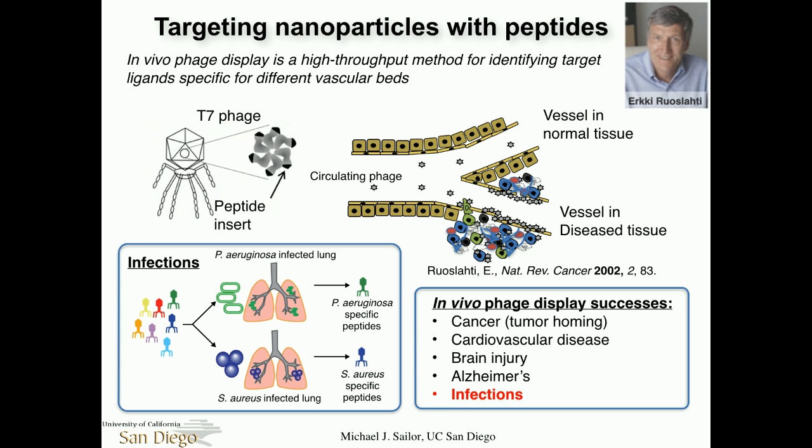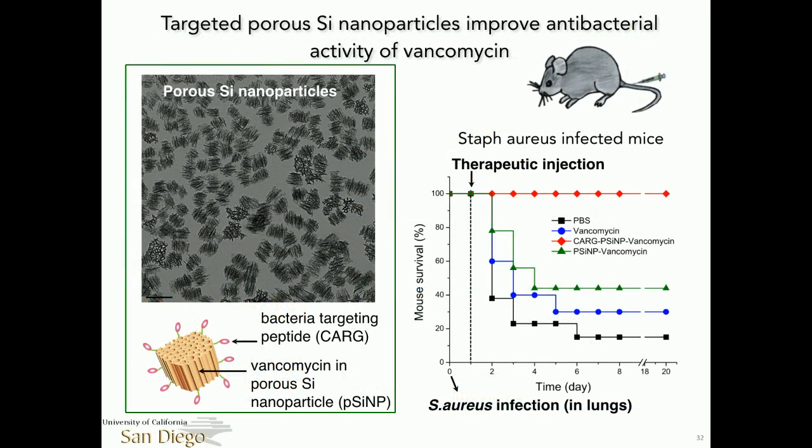We then attach a targeting peptide to these nanoparticles, identified by collaborator Erkki Ruoslahti using in vivo phage display. He takes a library of phage, inoculates an animal that already has the disease, and after multiple screening cycles finds peptides that selectively target diseased tissue. He's done this for cancer, cardiovascular diseases, brain afflictions, and infections. We did two models — Pseudomonas and Staph aureus — and I'll talk about the Staph aureus data.